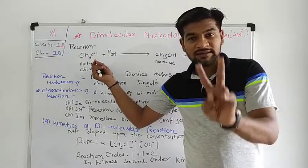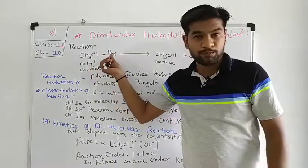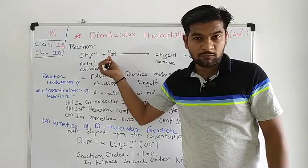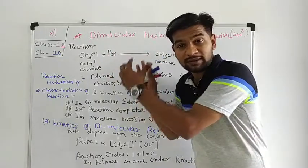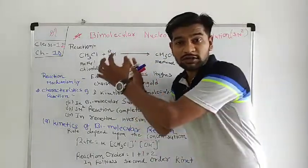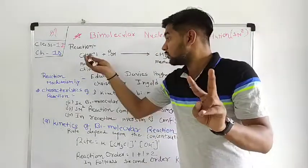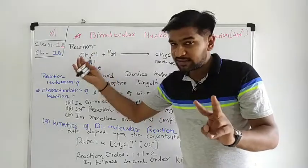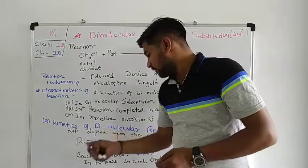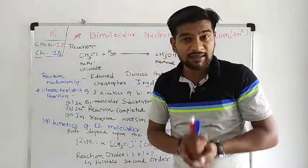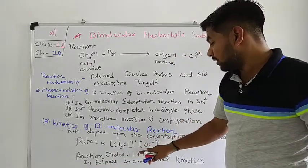The first reactant is CH₃Cl — methyl chloride — and the second is the nucleophile reactant, OH⁻. The concentration of both is involved here. The product depends on the concentration of both CH₃Cl and OH⁻. The rate of reaction: rate is equal to K times [CH₃Cl] times [OH⁻].